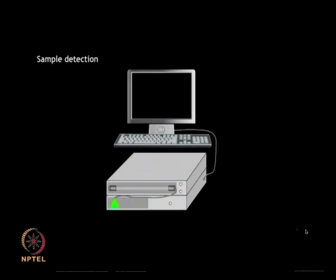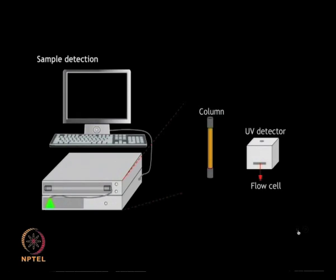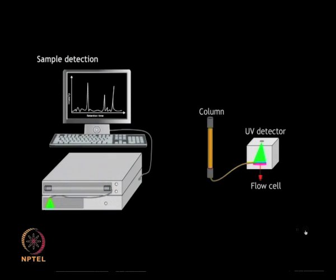The nano liquid chromatography, which makes use of C18 capillary columns, has gained popularity for proteomic studies due to their ability to achieve fine separations. These separated components pass from the column outlet into the flow cell, which is present in the detector. The most commonly used detector for protein analysis is a UV detector, which analyzes protein absorbance at 280 nanometers and plots a graph of retention time against intensity.